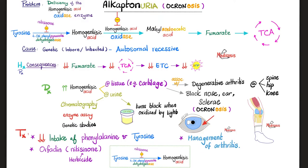What is going to happen to the patient with alkaptonuria? Fumarate is absent because the enzyme did not exist, which means everything before the block goes up, but everything after goes down. So less fumarate, less acetoacetate means less energy, less ATP. Moreover, there is accumulation of homogentisic acid everywhere — in the tissue and in the urine. Precipitation in the tissue, especially cartilage and other connective tissue, can lead to black nose, especially the tip of the nose.